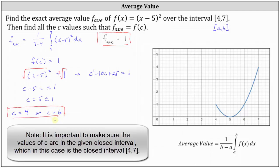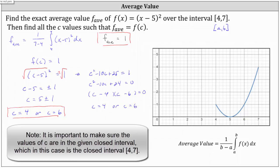Using the expanded equation, we set the right side to zero by subtracting one from both sides, giving c² minus 10c plus 24 equals zero. Factoring, the factors of positive 24 that add to negative 10 are negative four and negative six. So c minus four equals zero when c equals four, or c minus six equals zero when c equals six. Using either method, we get the same values for c.